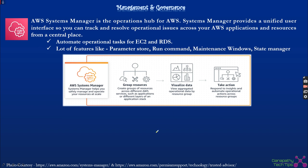The next one is AWS Systems Manager, the operations hub within AWS. It holds a lot of things and is a unified user experience where you can track and resolve your operational issues. For example, if you have a fleet of 100 EC2 instances and need to run a command or upgrade something across all of them, instead of logging into each EC2, you can use AWS Systems Manager Run Command. You specify your targets — the fleet of EC2 instances — and it will run the command on all of them.